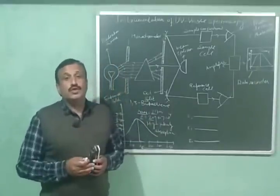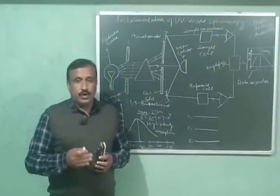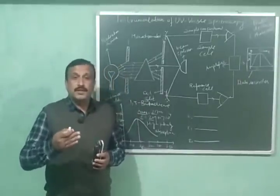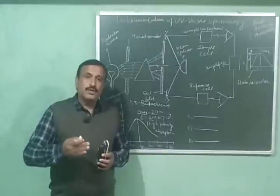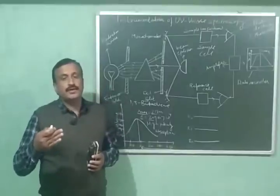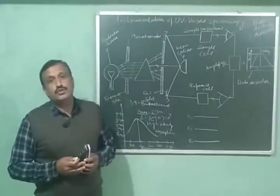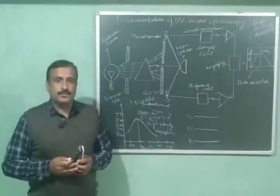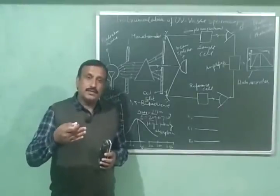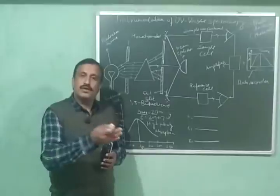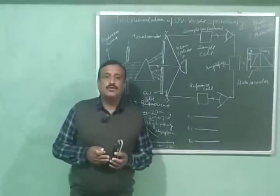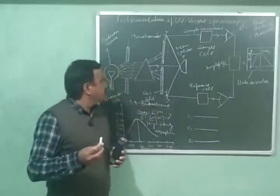The instrument used to record a UV-visible spectrum is called a UV-visible spectrophotometer or UV-visible spectrometer. This instrument measures the percentage of radiation absorbed, called percentage absorbance, or the percentage of radiations transmitted, called percentage transmittance, and it compares the intensity of transmitted radiations with that of incident light.